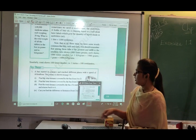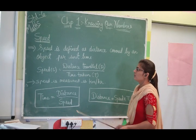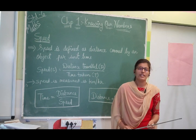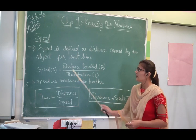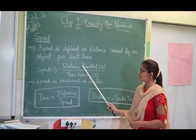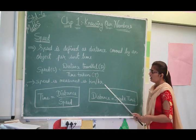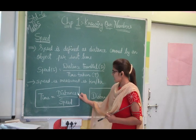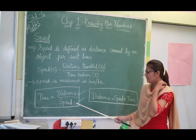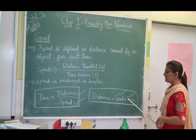Now we will learn about speed. Speed is defined as the distance covered by an object per unit time. The formula is: Speed = Distance ÷ Time, or S = D/T. Speed is measured in kilometers per hour. When distance and speed are given and you need to find time: Time = Distance ÷ Speed. When speed and time are given and you need to find distance: Distance = Speed × Time.